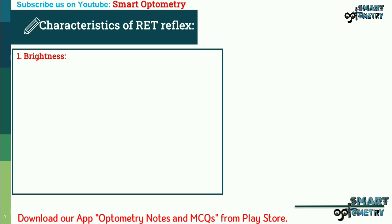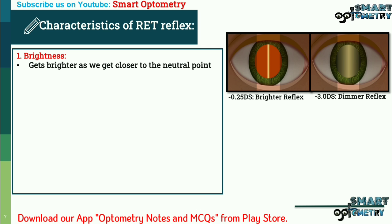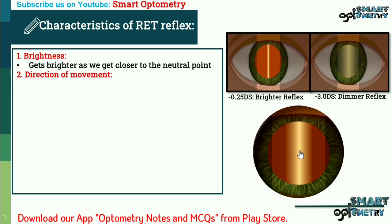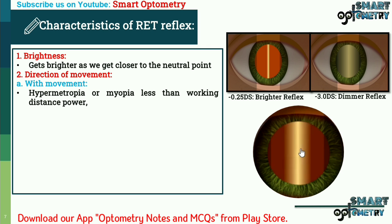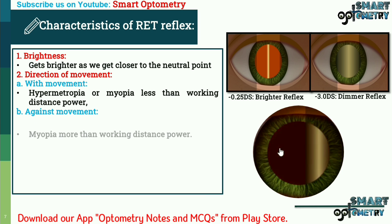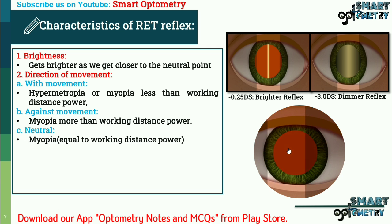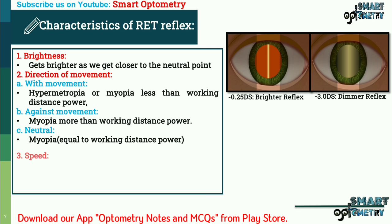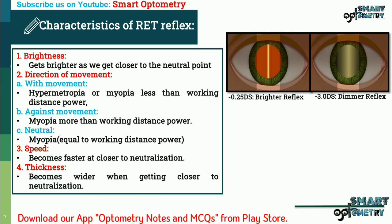The characteristics of the red reflex are: brightness — it gets brighter as we get closer to the neutral point; direction of movement — with movement indicates hypermetropia or myopia less than working distance, against movement indicates myopia more than working distance, and neutral indicates myopia equal to working distance power; speed — the reflex becomes faster closer to neutralization; and thickness — the reflex becomes wider when getting closer to neutralization.